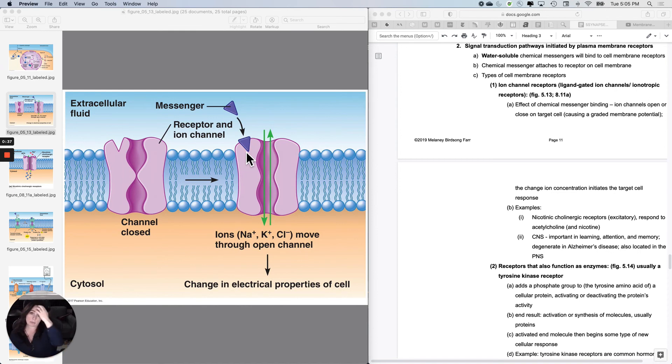The types that we're going to go through—the first one you've already met a bunch of times. It is an ion channel receptor.